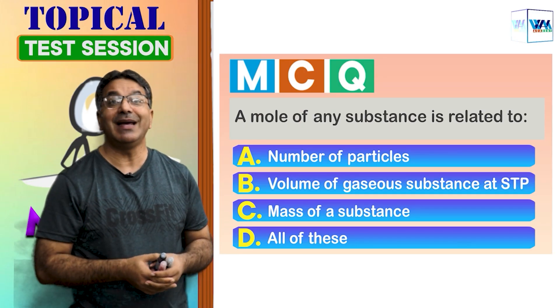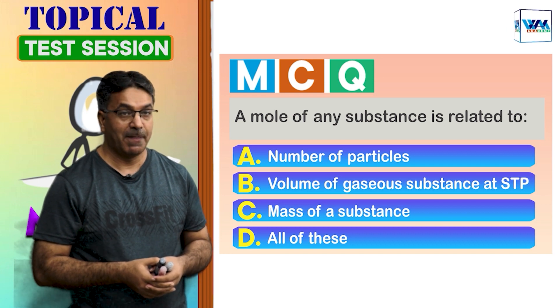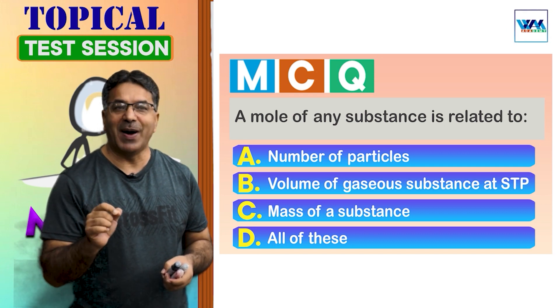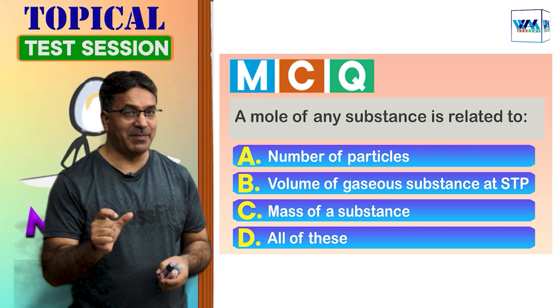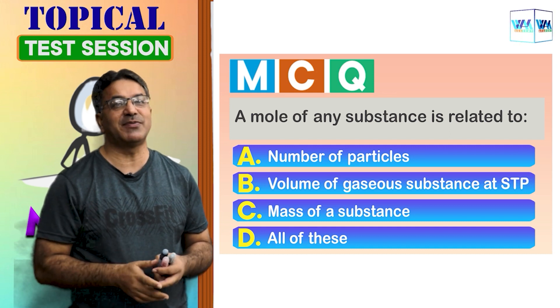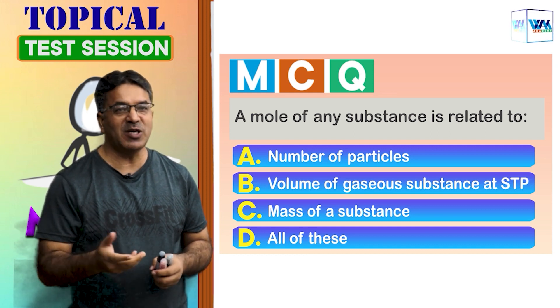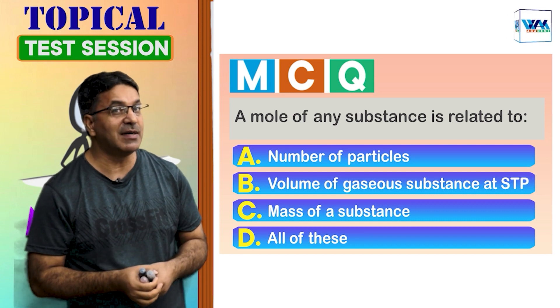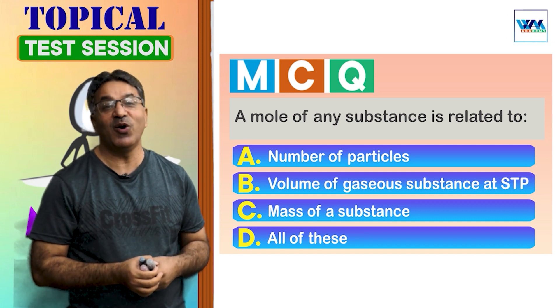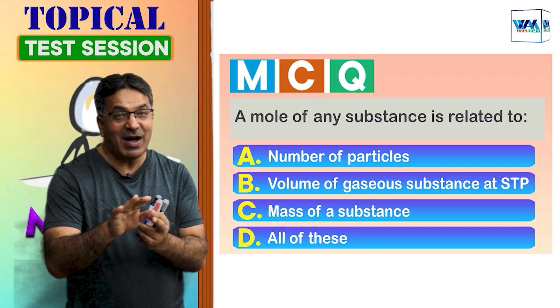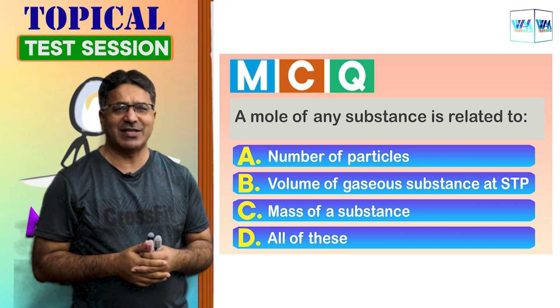A mole of any substance is related to: option A - number of particles, option B - volume of gaseous substance at STP, option C - mass of a substance, and option D - all of these. Now let me explain what the question is asking.